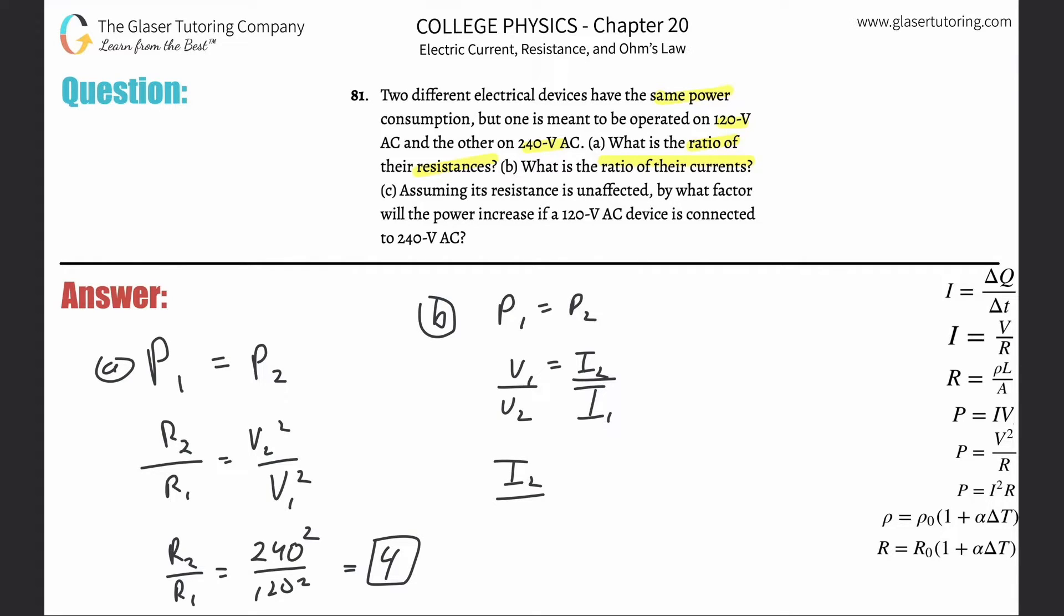All I now need to do is plug in the values. Current two, which I'm calling the 120 volt apparatus, divided by current one will equal V1, which in this case was 120 over 240. Just simply plug it in and we're going to realize we come out to a value of about one half.